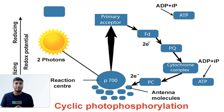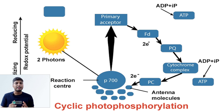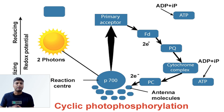In cyclic photophosphorylation, only a single photosystem is involved — Photosystem 1. In PS1, sunlight is absorbed by chlorophyll a, which is the main photosynthetic pigment and the reaction center. Chlorophyll a of PS1 absorbs sunlight at 700 nanometers. Once sunlight falls on chlorophyll a of PS1, it gets excited, emits electrons, and these electrons are carried by different electron carriers. The first is a primary electron carrier called the ferredoxin-reducing substance (FRS).